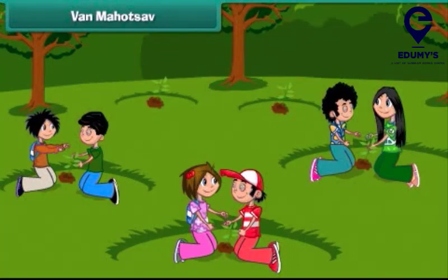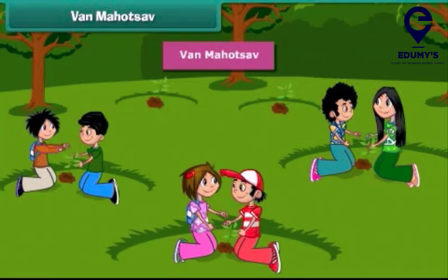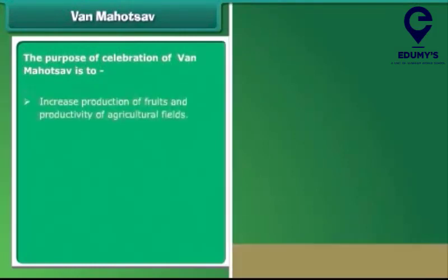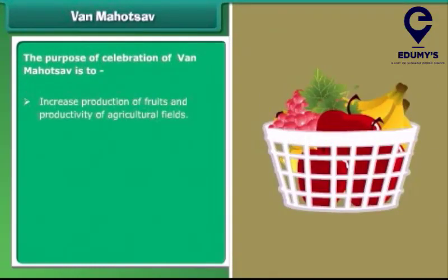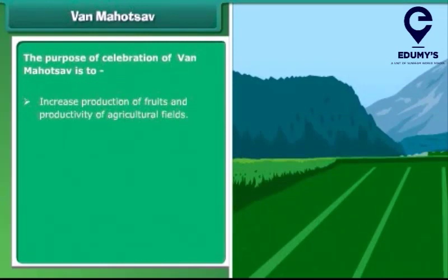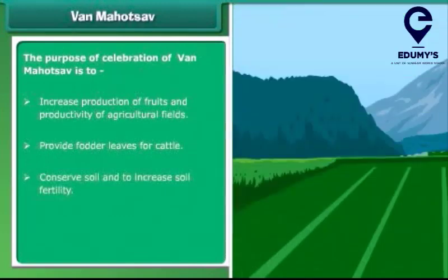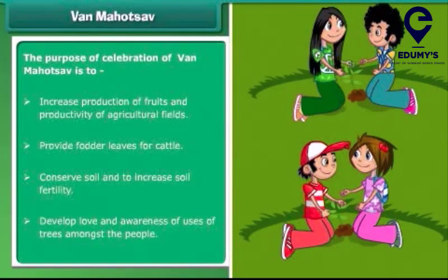Now let's know about Van Mahotsav. Van Mahotsav is a tree planting festival celebrated in the month of July every year. We celebrate Van Mahotsav to increase production of fruits and productivity of agricultural fields, provide fodder and leaves for cattle, conserve soil and increase the fertility of the soil, and generate love and awareness of the uses of trees among the people.